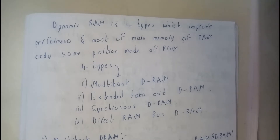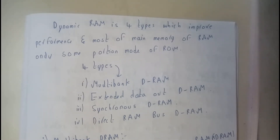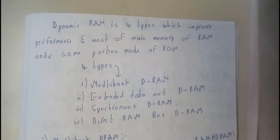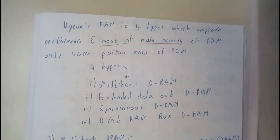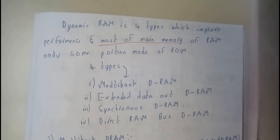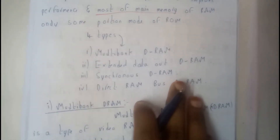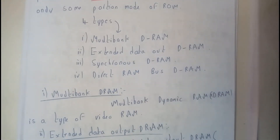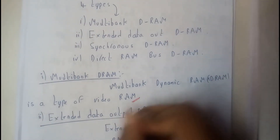Static RAM has no subtypes, whereas Dynamic RAM has four types. These types improve the performance of main memory. Note that only some portion of memory is made up of ROM, which can only perform read operations. The four types of DRAM are: Multibank Dynamic RAM, Extended Data Out Dynamic RAM, Synchronous Dynamic RAM, and Direct Rambus Dynamic RAM. Multibank Dynamic RAM is used for video playback, helping run videos accurately frame by frame.